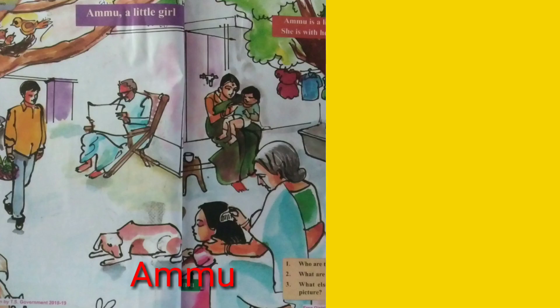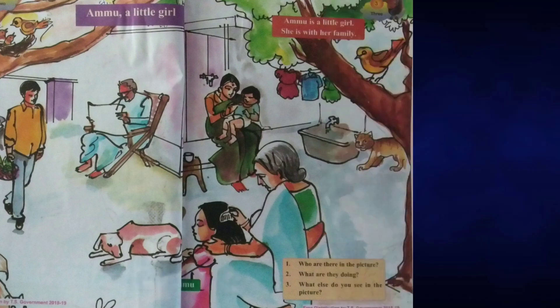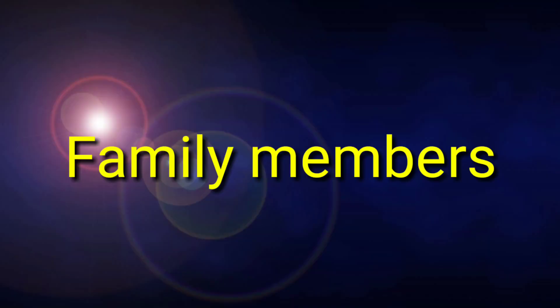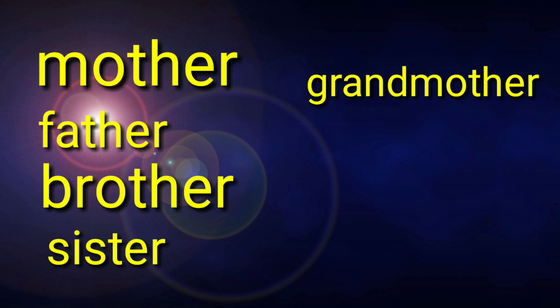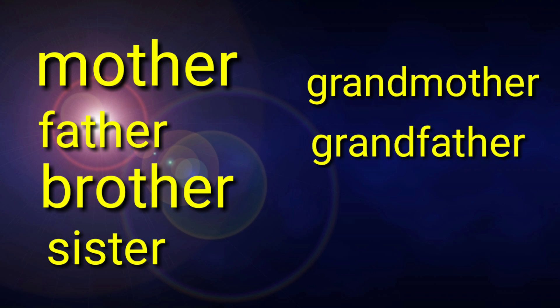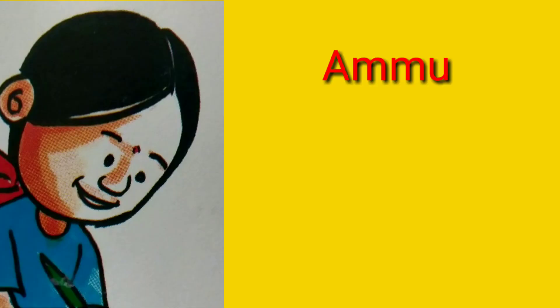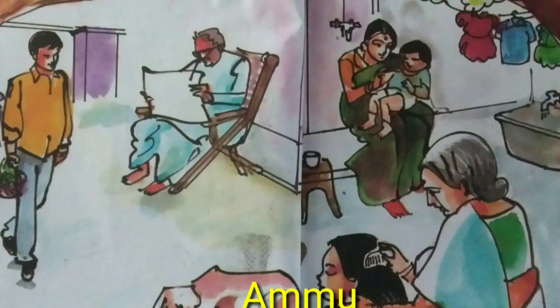It is Ammu's family. Children, in our family, we live with our mother, father, brother, sister, grandmother and grandfather. Same, Ammu also living with her family. Let's observe this picture.